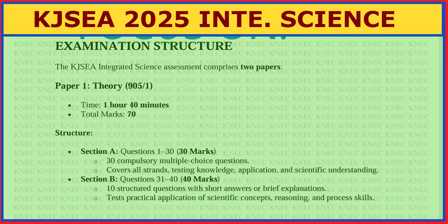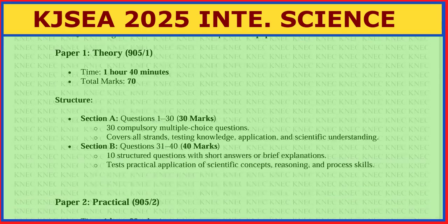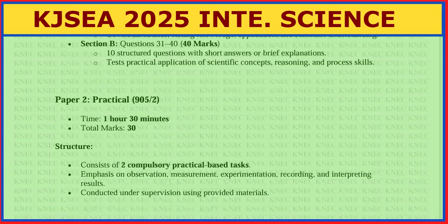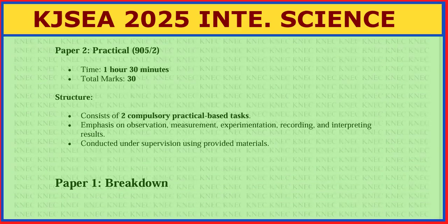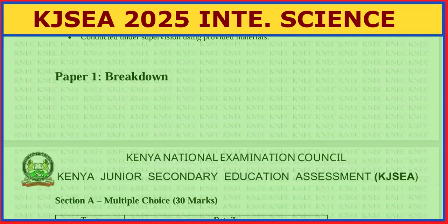Section B also tests practical application of scientific concepts, reasoning, and process skills. Then we have the practical paper — 905/2 — one hour 30 minutes, total marks 30. This paper consists of two compulsory practical-based tasks with emphasis on observation, measurement, experimentation, recording and interpreting results, conducted under supervision using provided materials.